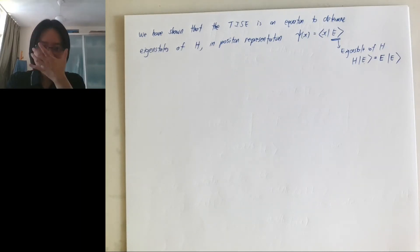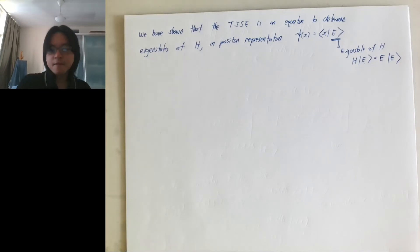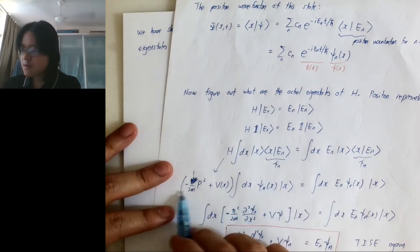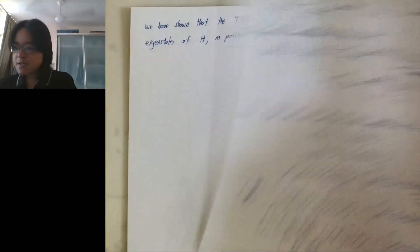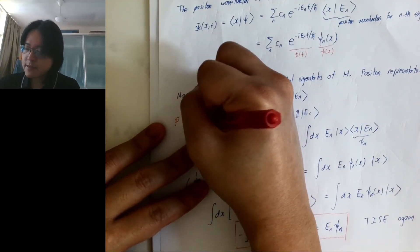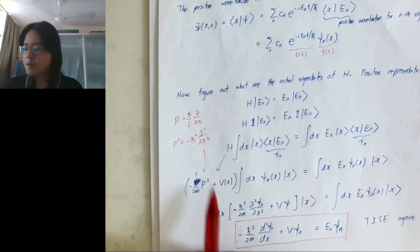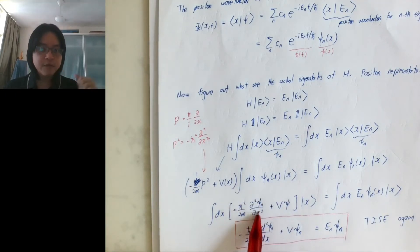A clarification: in this course, everything uses ħ (h-bar). The momentum operator is p = (ħ/i)(d/dx), so p² naturally gives -ħ²(d²/dx²). The ħ comes in through this momentum operator substitution, not directly from the Schrödinger equation itself.